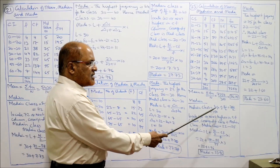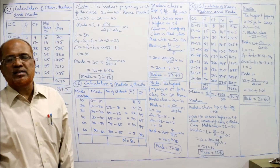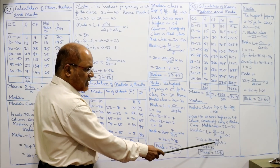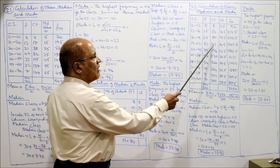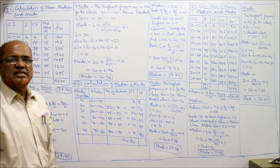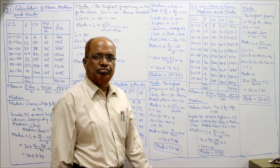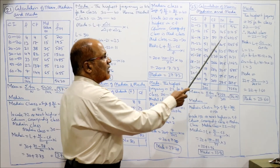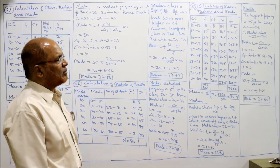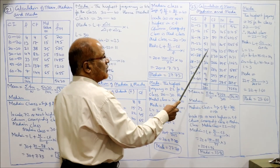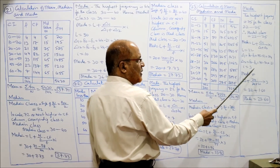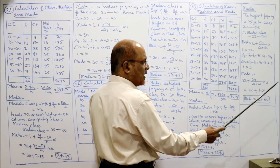Median class: N/2 = 300/2 = 150. Locate 150 in CF — next higher is 176, corresponding to class 22–25. Median = L + [(N/2 − CF) / F] × I = 22 + [(150−101)/75] × 3 = 22 + 1.96 = 23.96. For mode, the highest frequency is 75, corresponding to the class 22–25. Modal class = 22–25. Mode = 22 + [Δ1/(Δ1+Δ2)] × I, Δ1=75−51=24, Δ2=75−54=21, I=3. Mode = 22 + [24/(24+21)] × 3 = 22 + 1.60 = 23.60.